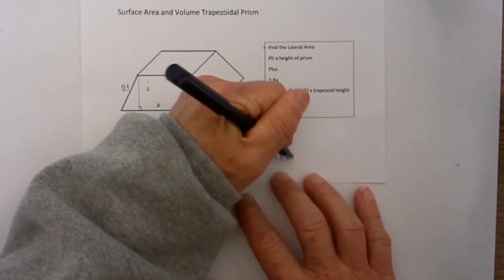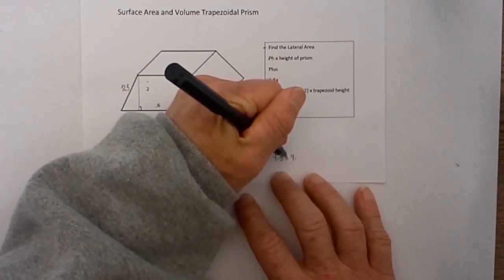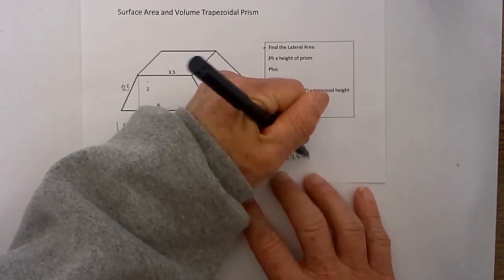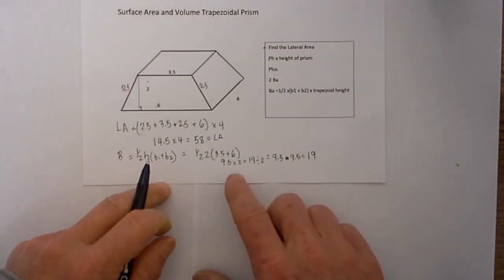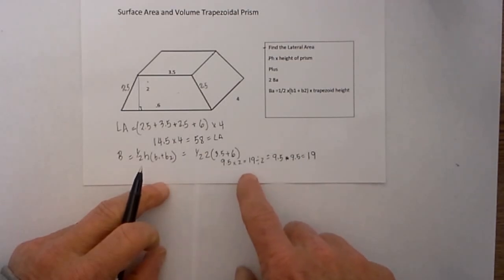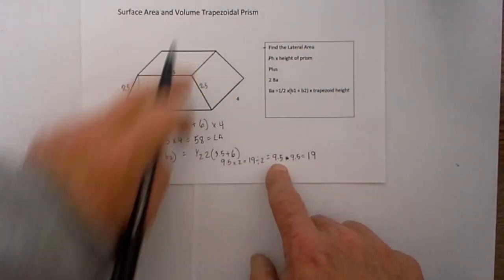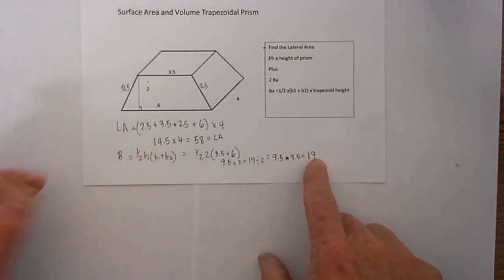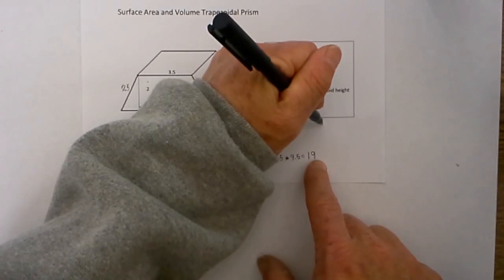So I will go 9.5 times 2 is equal to 19. So the area of 1 base was 9.5 but we have 2 bases so we will add 2 of those together or you can multiply it by 2 and that equals 19. So now let's just add these 2 together.